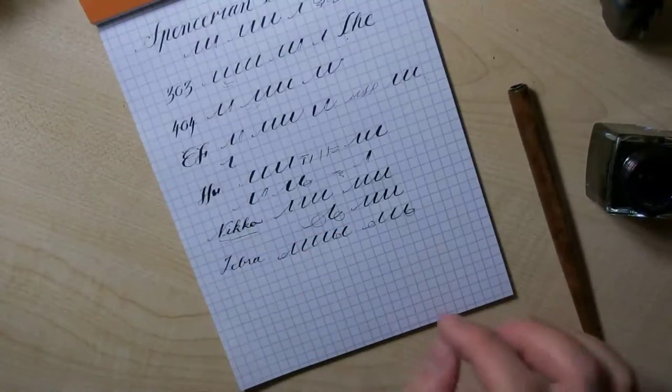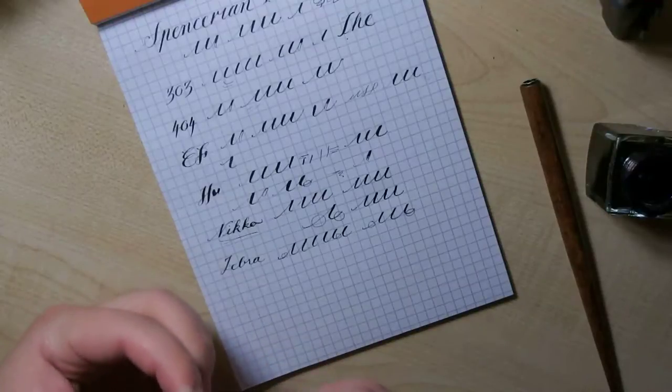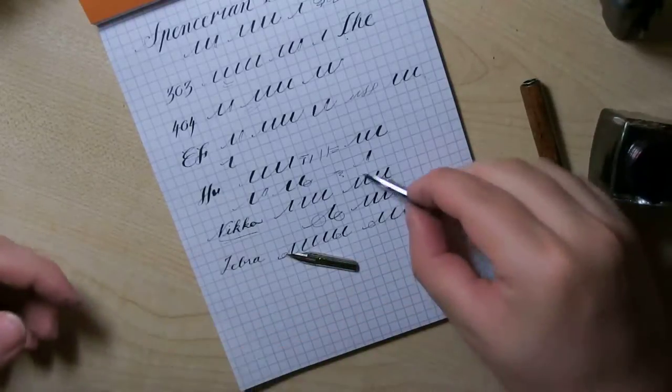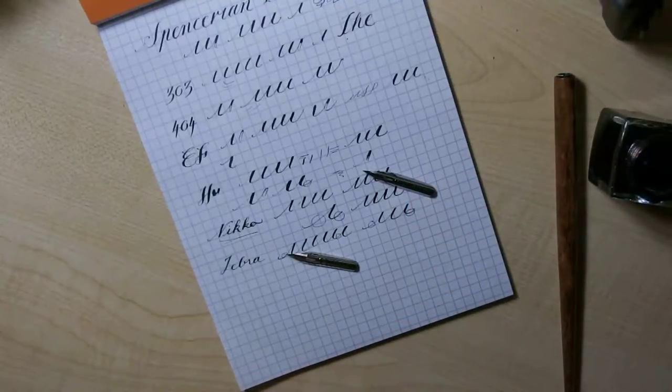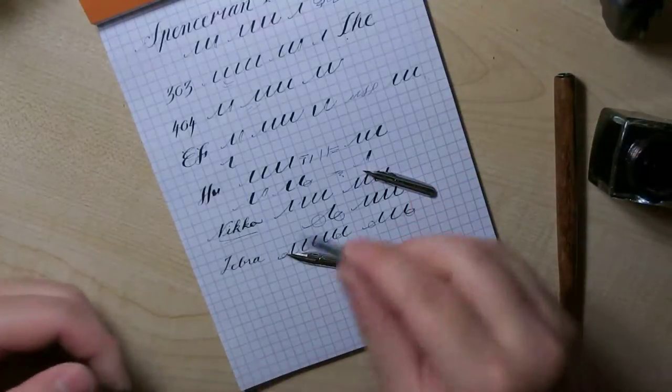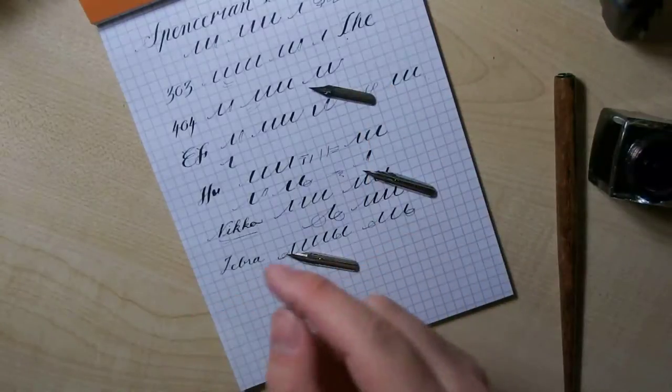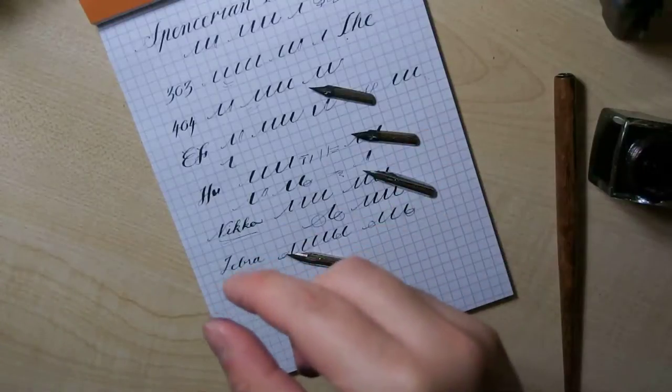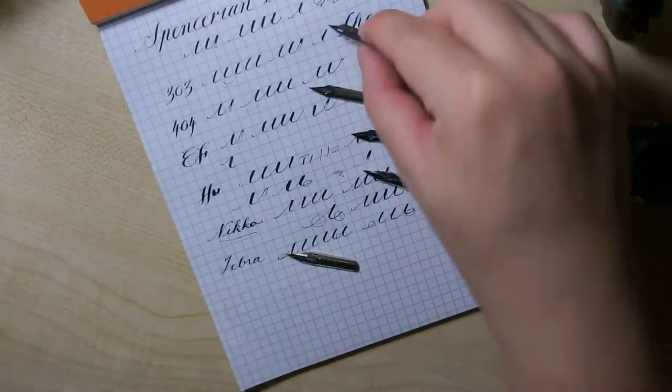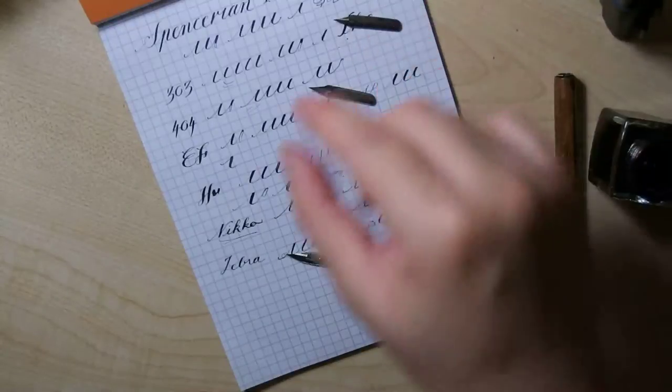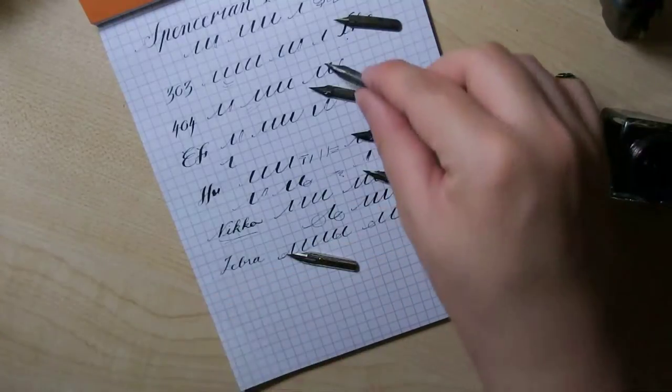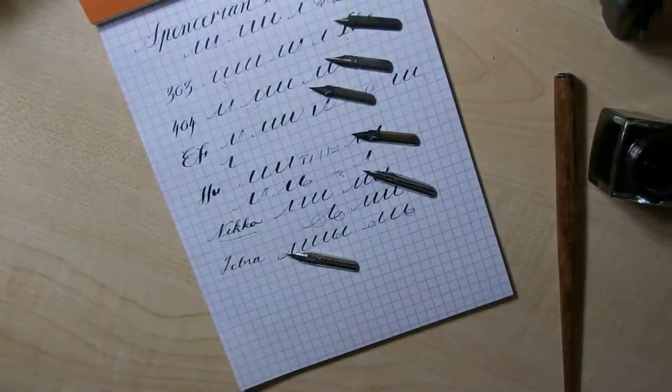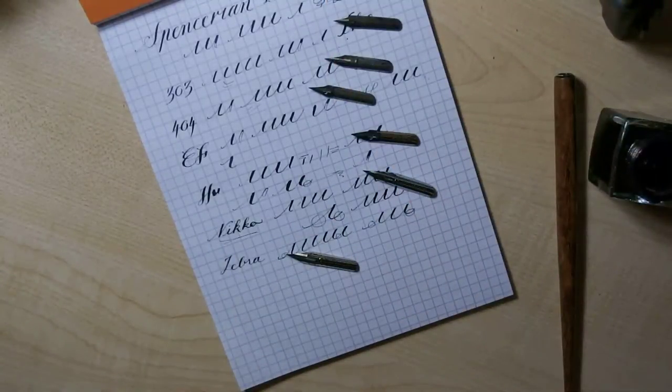Anyway, so here are the nibs again. The Zebra, the Nikko, the EF Principality, the Hunt Imperial, the 303, 404, and my favorite Spencerian number one. Thank you for watching. Bye!